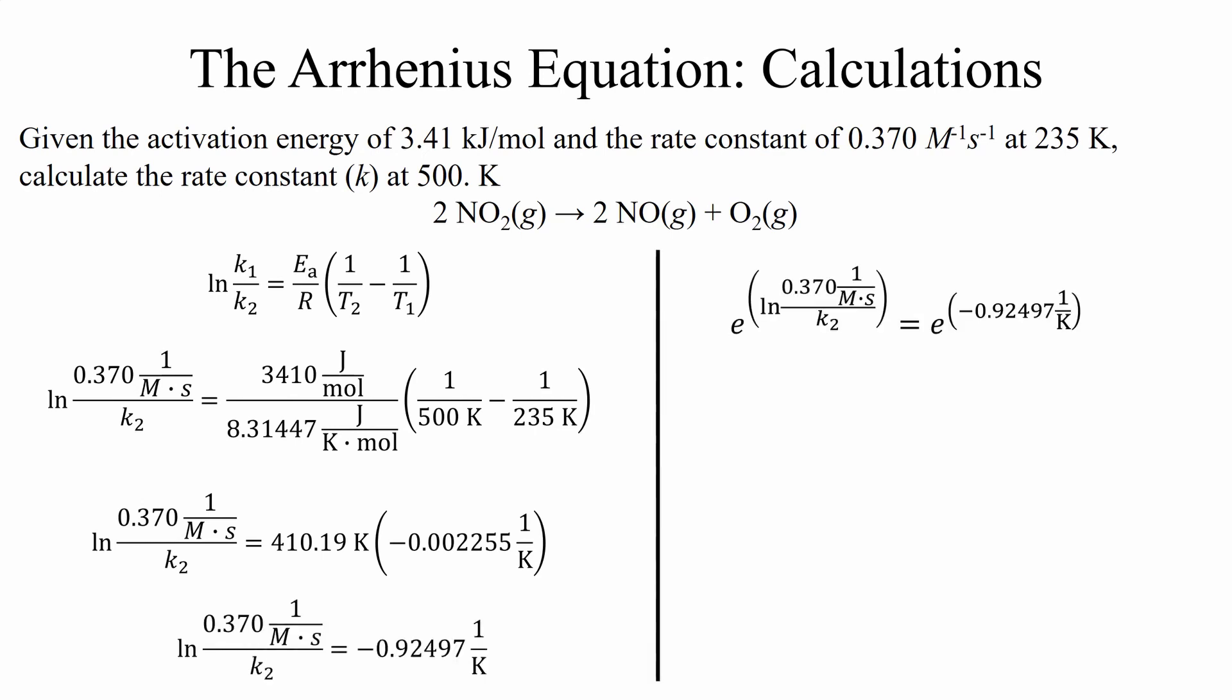So in this case, we are left with a little bit of an issue at the end. We need to get rid of that natural log so we can solve for K2. So we need to take the anti-natural log of both sides. And now we can solve for K2.